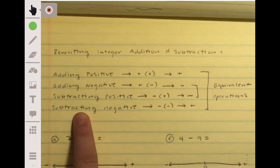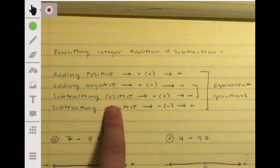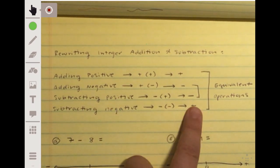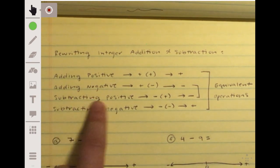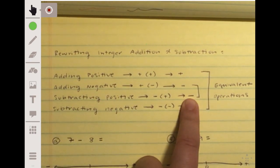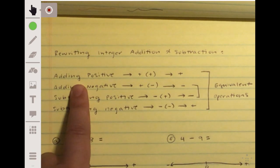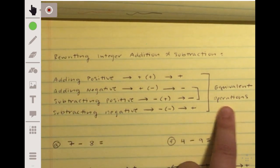Same thing with subtracting a negative, we're like, well, we're subtracting, so it's definitely got to get smaller. But if you're subtracting a negative, you're actually adding to the quantity. So again, equivalent operations, anytime you're adding a negative or subtracting a positive, it is actually subtraction. But when you're adding a positive or subtracting a negative, that's acting as addition.